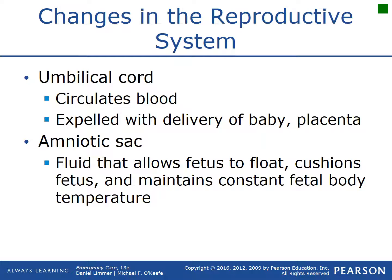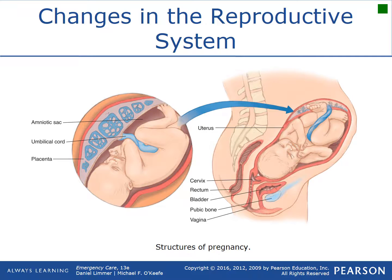The amniotic sac is basically a little fetus hammock. When you hear phrases like 'their fluid broke' or 'their waters broke,' that's the amniotic sac breaking and fluid being discharged. In the illustration, the placenta should be up toward the top, the baby is within the amniotic sac, and you can see the umbilical cord running from the placenta into the belly button of the fetus.